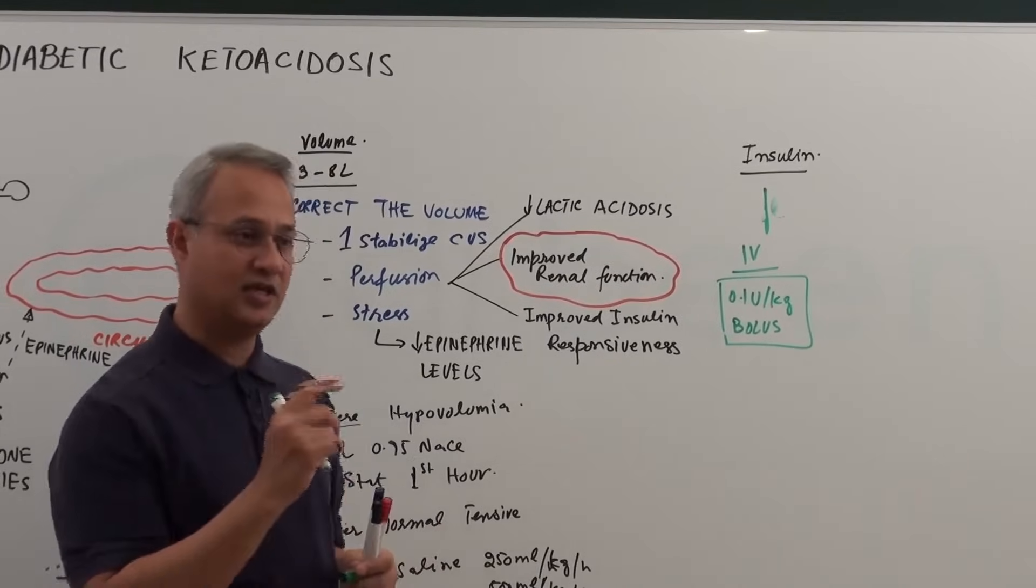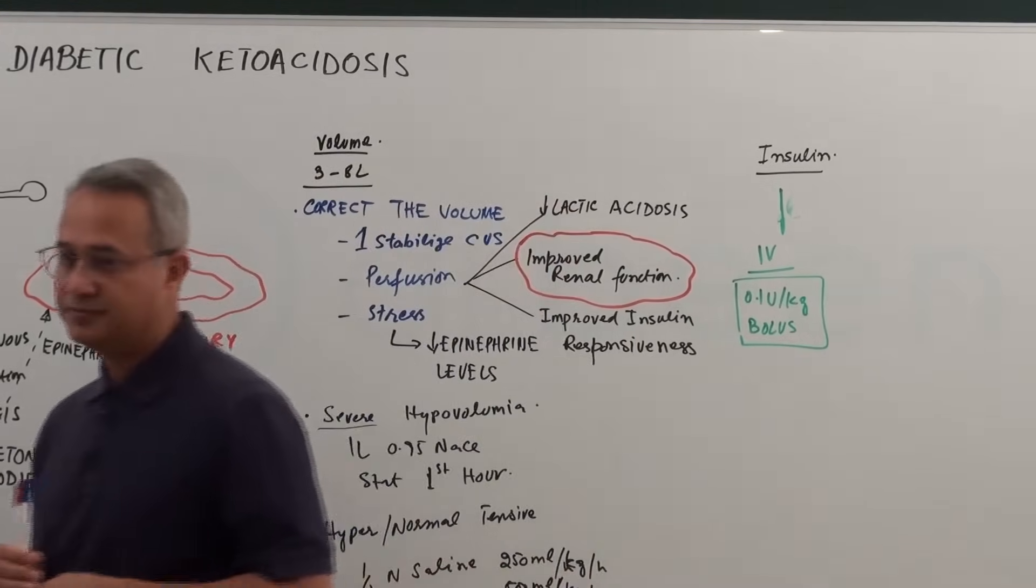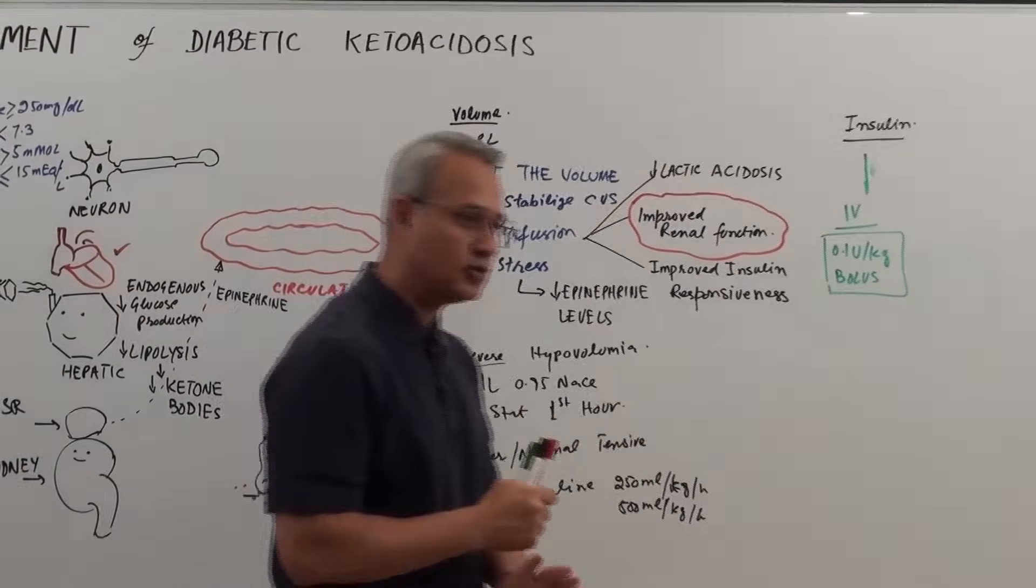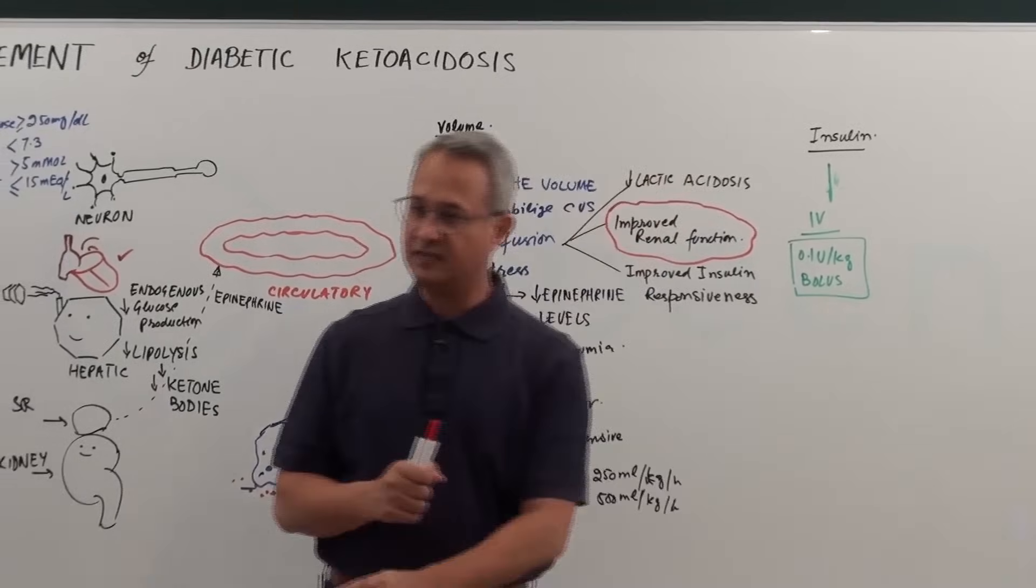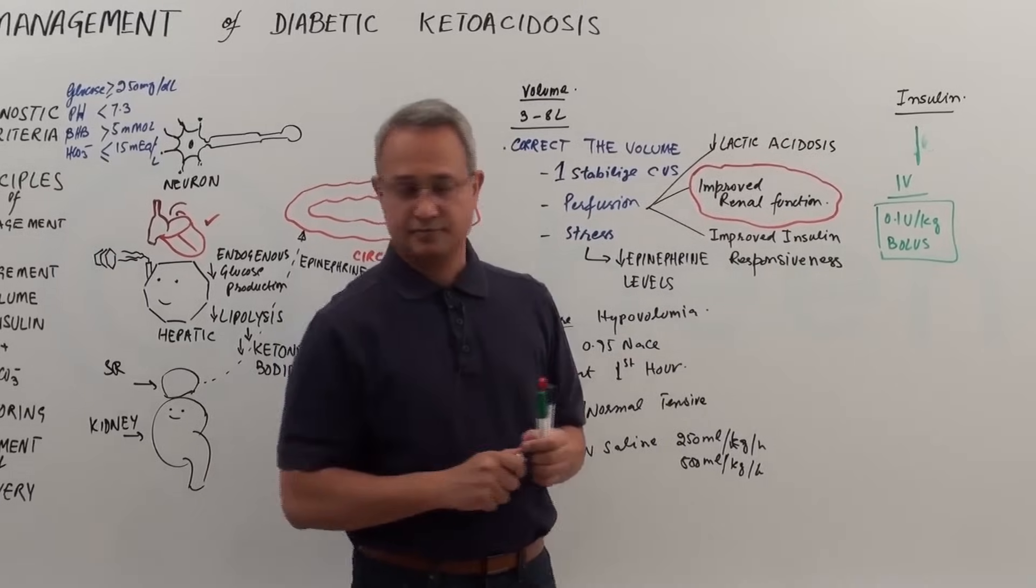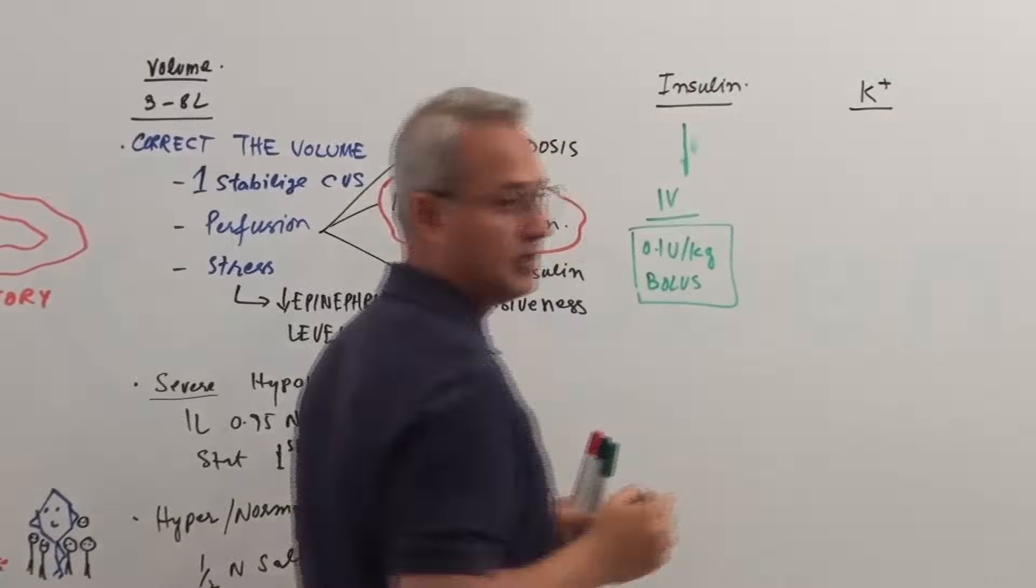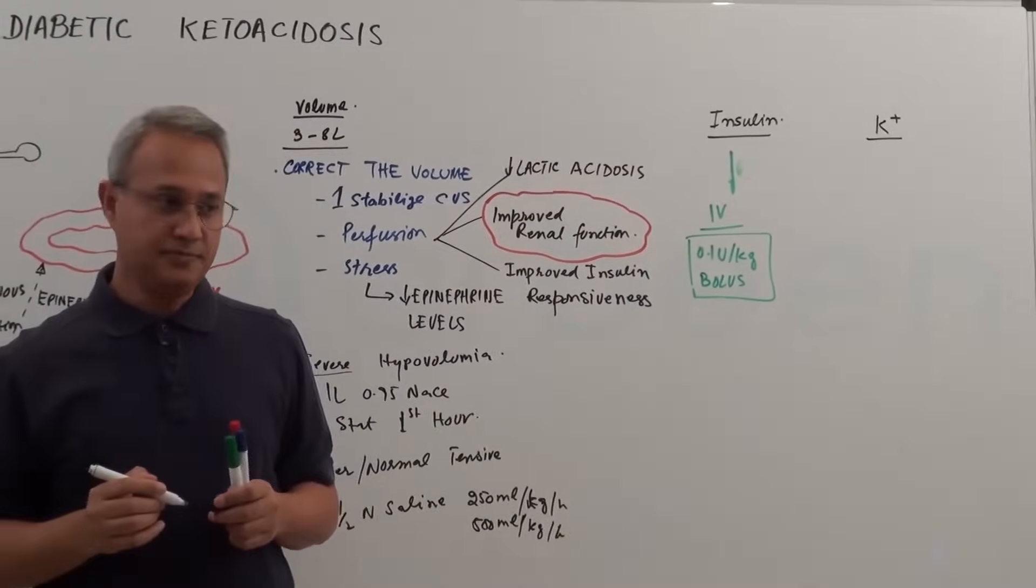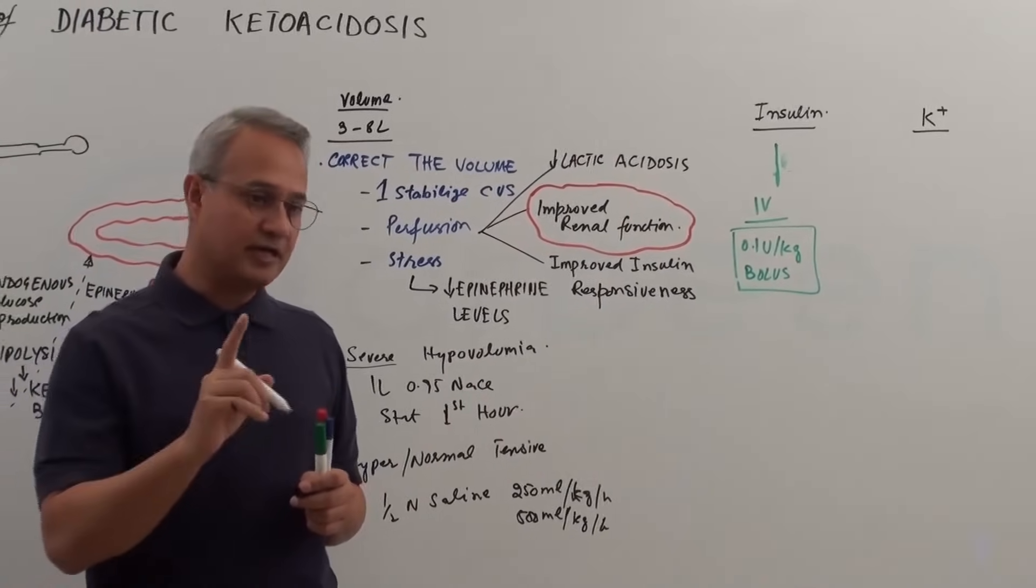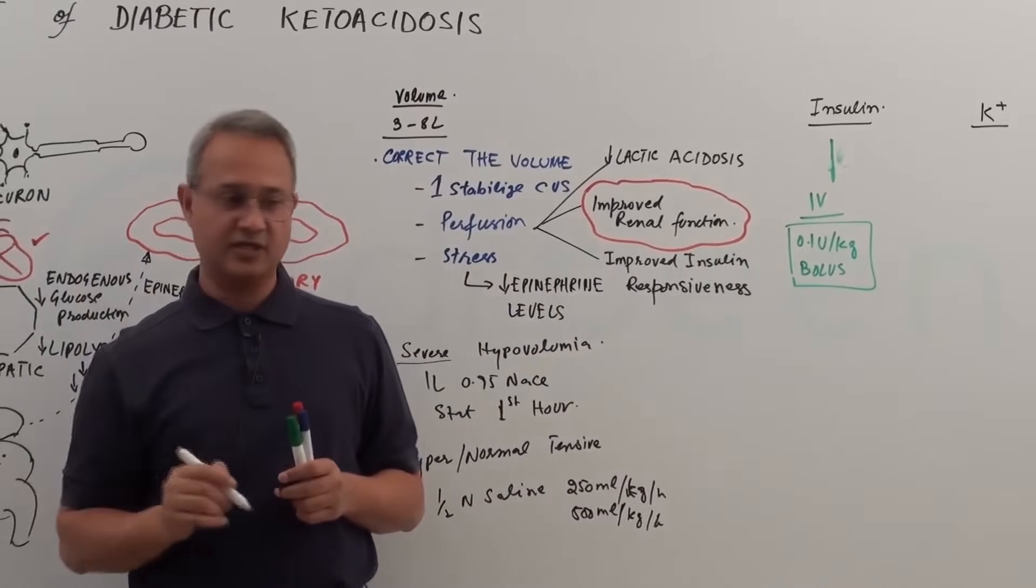There is just one thing here. There is something that might stop you from giving insulin. There may be a decision here that don't give insulin, you're going to kill the patient by giving insulin. What is that? Potassium levels. Why? What are the things that move potassium into the cell? One major thing is insulin.